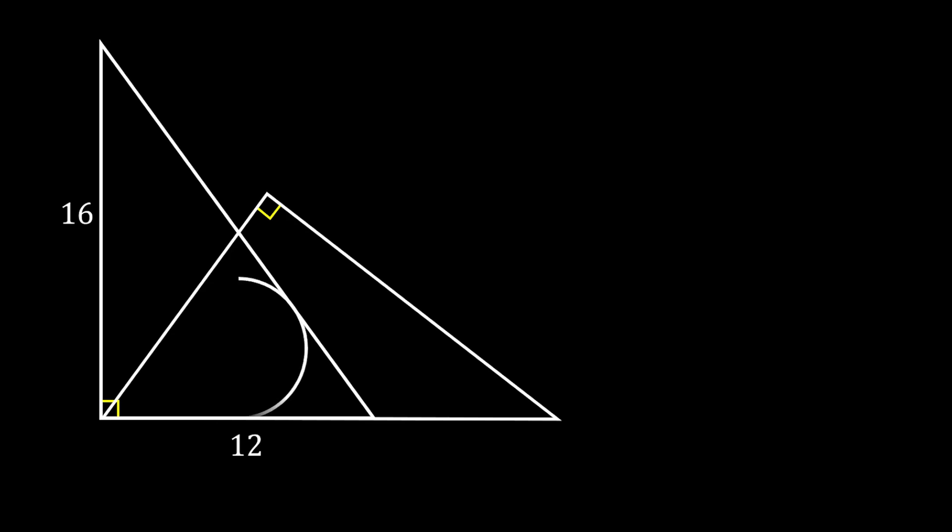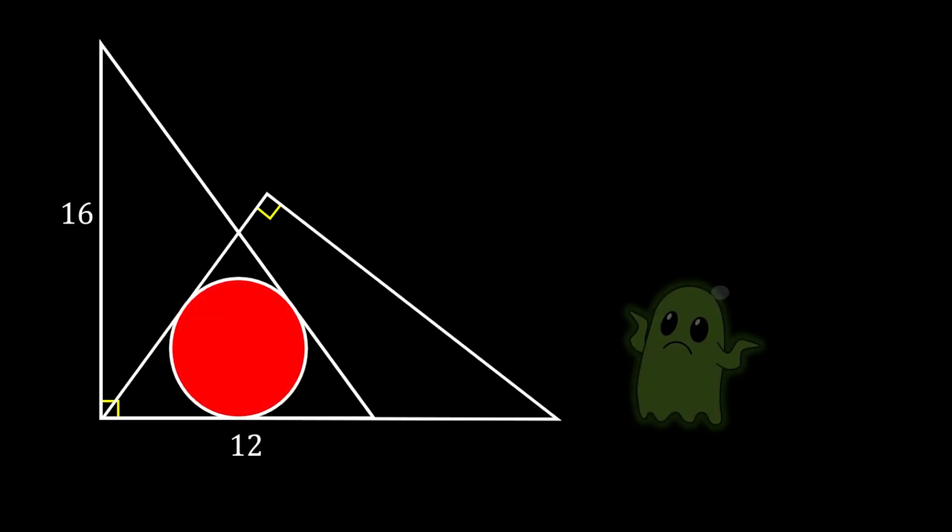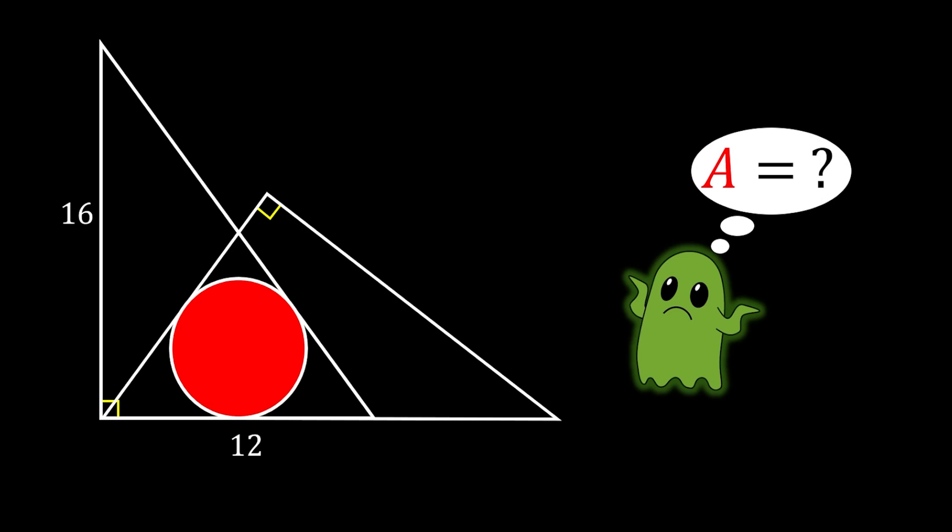Now we will inscribe the circle inside the intersection between those two triangles. The question is, is it possible for us to find the area of this red circle?